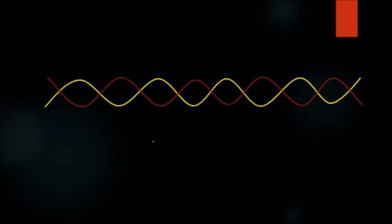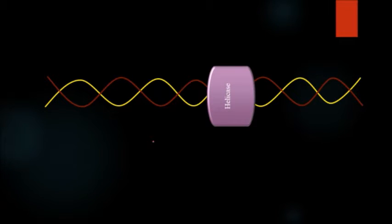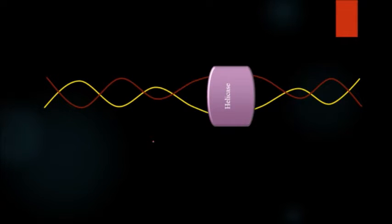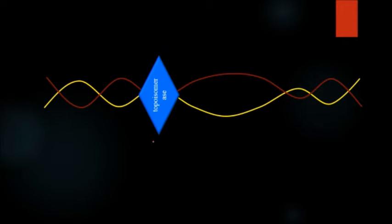The primary events involved in DNA replication are as shown here. This is the double stranded DNA. First, it needs to be separated. This is done by enzyme helicase. It separates the DNA strands. Then due to its helicase activity, it creates a topological stress which is overcome by topoisomerase enzyme.